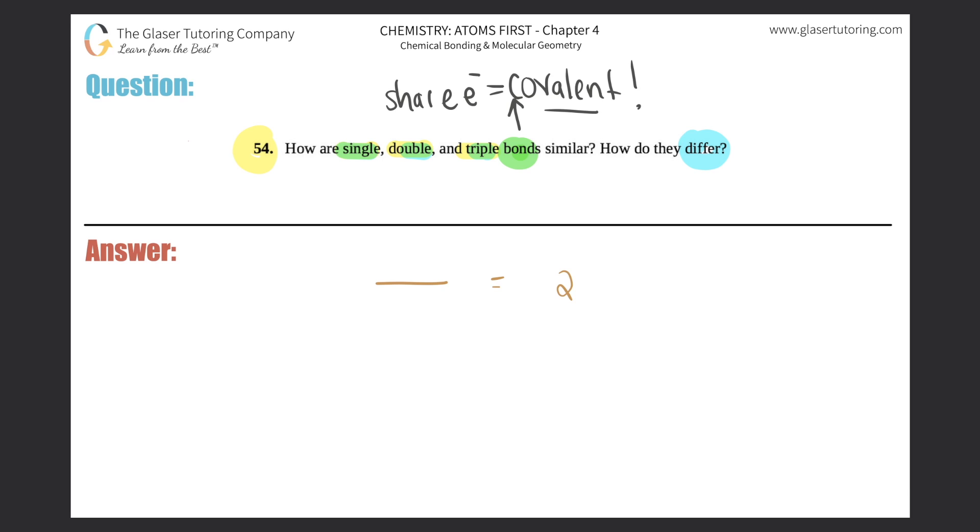Okay, so single bond SB is two electrons. Double bond DB is two lines which is four electrons.